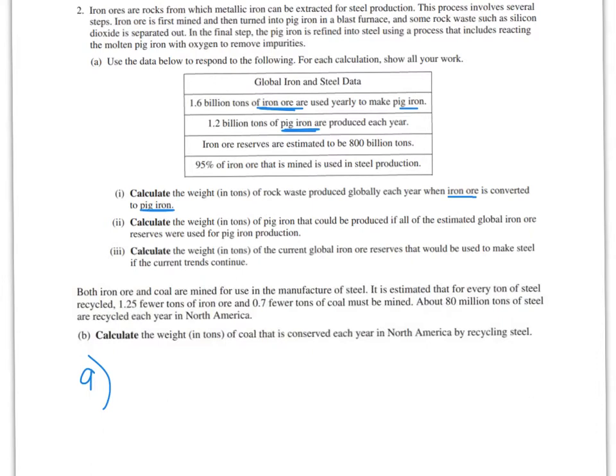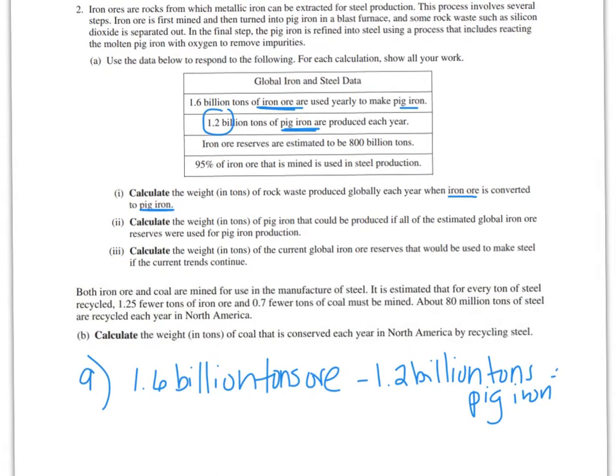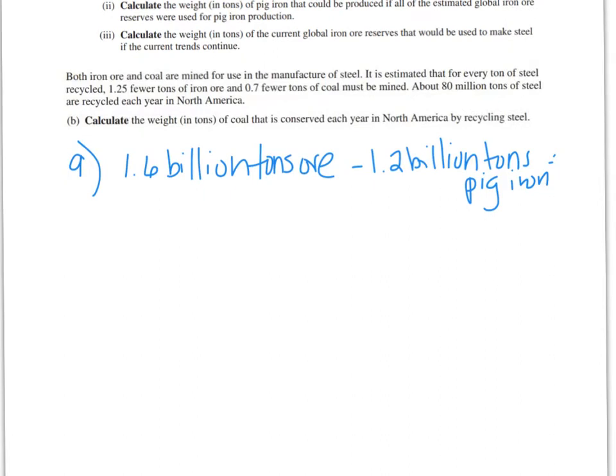If we take 1.6 billion tons of ore, you can just leave the word billion, you don't have to write out all the zeros. 1.6 billion tons of ore, and I'm going to subtract that we get out of that 1.2 billion, and so we're going to have some waste ore left. This is pig iron. So I'm going to have some waste from this process. And I'm going to end up with 0.4 billion tons of waste.